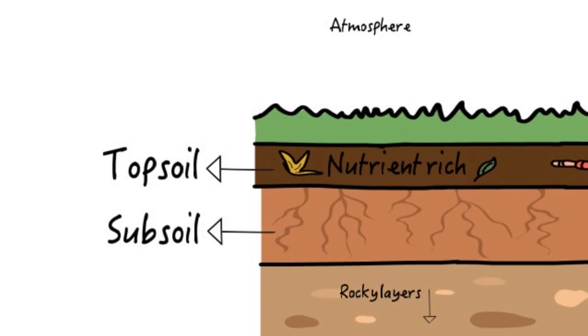The third layer of soil under the subsoil is called bedrock. Bedrock is the hardest part of soil and it provides raw materials as rocks break down.